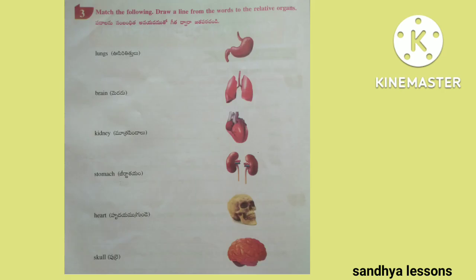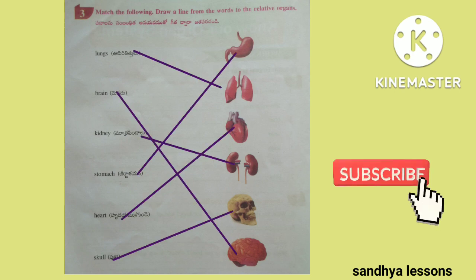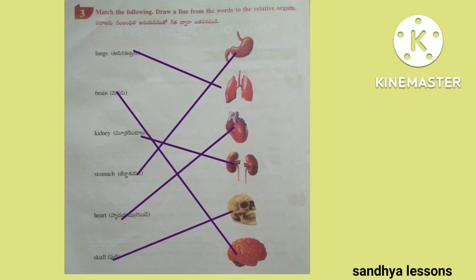Third, match the following — draw a line from the words to the relative organs: lungs, brain, kidney, stomach, heart, skull.